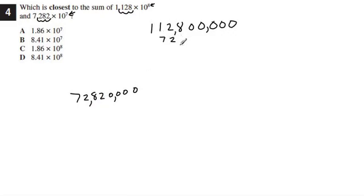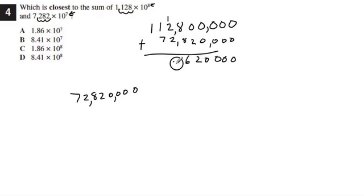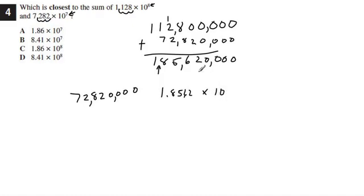Now we add — not subtract — lining up place values: 112,800,000 plus 72,820,000 equals 185,620,000. Converting back to scientific notation, the decimal goes between the first two digits: 1.8562 times 10 to the 8th, since moving the decimal back takes 8 jumps. So 1.8562 times 10 to the 8th is closest to 1.86 times 10 to the 8th.